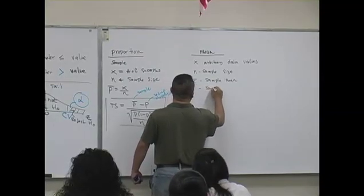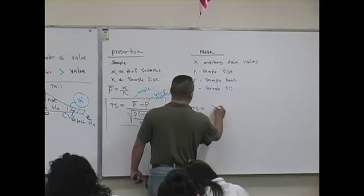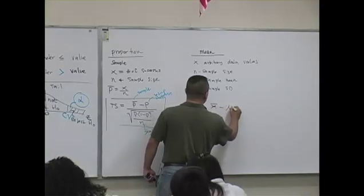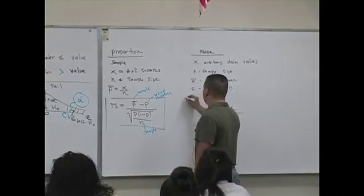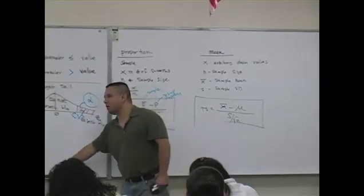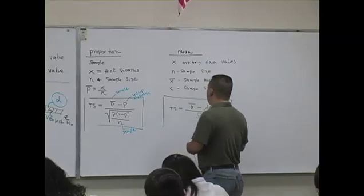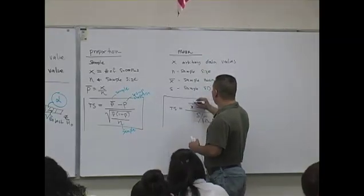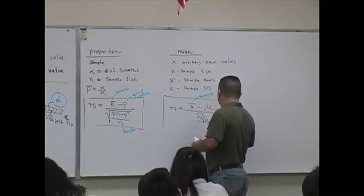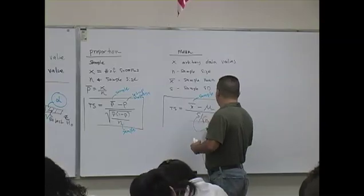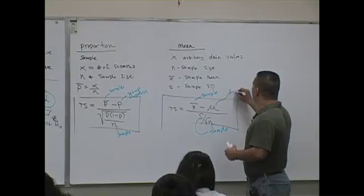S is the sample standard deviation, and here your test statistic is going to look like x bar minus mu over s divided by the square root of n. This is a test statistic about a mean. This x bar is from your sample, this n is from the sample, this s is from the sample, this mu is from your hypothesis.